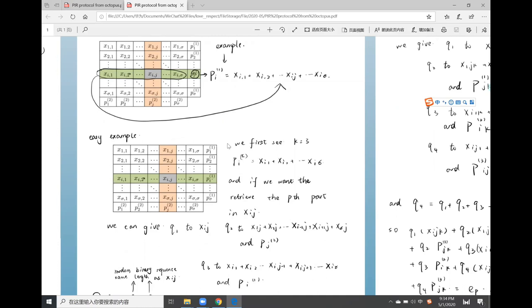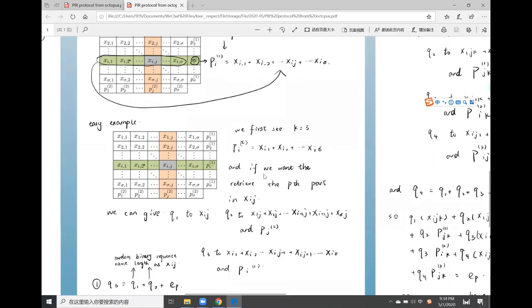Then let us see an easy example. In this example, k equals 3. Then we have P.